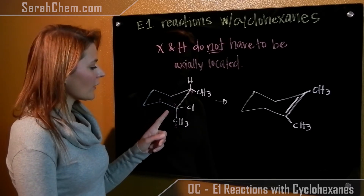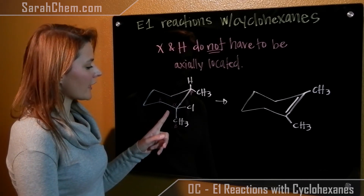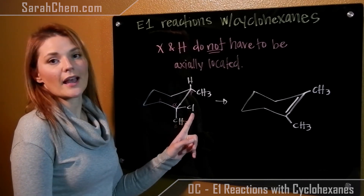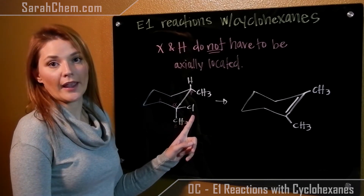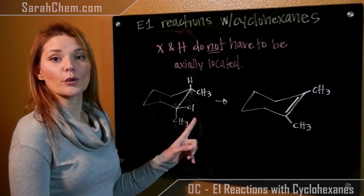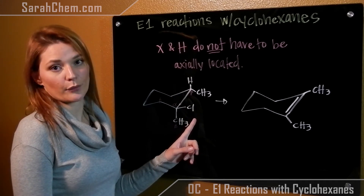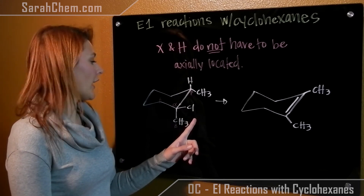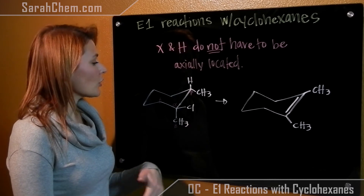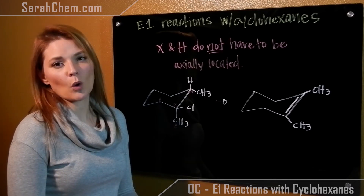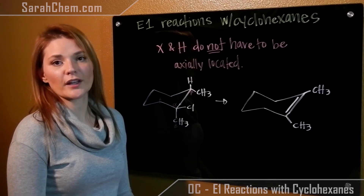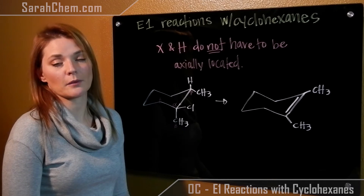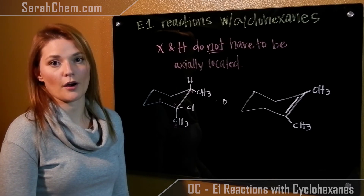As you can see, I've given you here a cyclohexane where your chlorine is equatorially located. That's completely fine — you will still see a reaction in this particular case. I think it's a good idea to make sure you're always establishing where your alpha and beta carbons are.